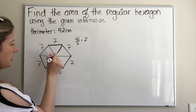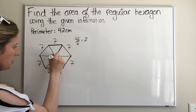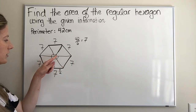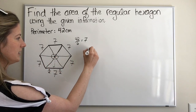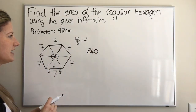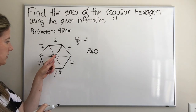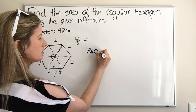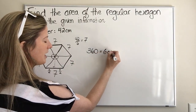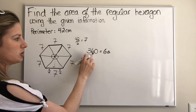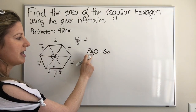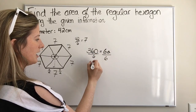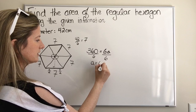Let's think about the triangle. Because all six triangles are congruent, we know each center angle must be the same. If we go all the way around, there are 360 degrees, and there are six equal angles. So we take 360 divided by six, and we get that each angle equals 60 degrees.